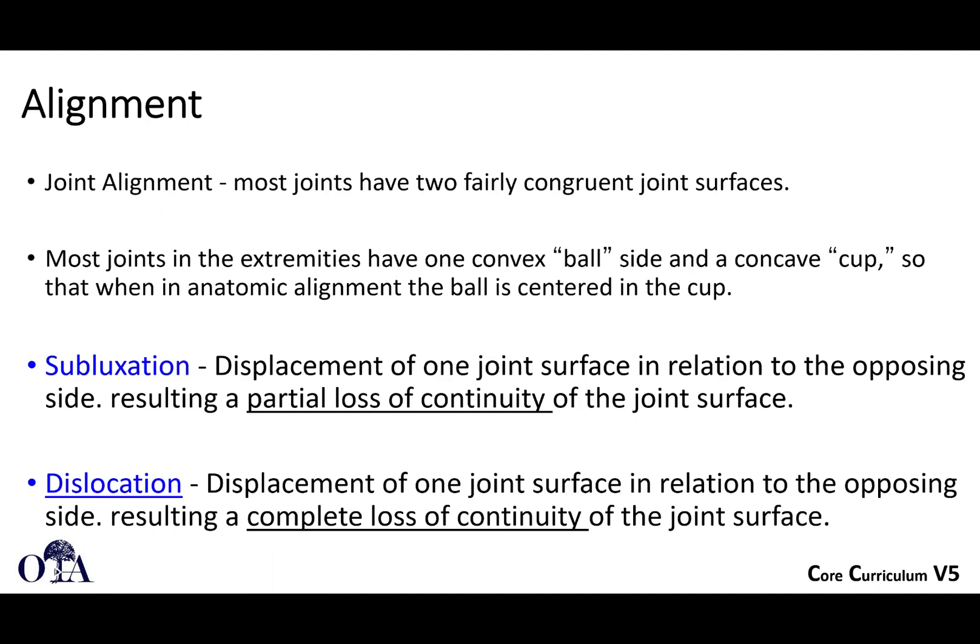Most joints have two fairly congruent joint surfaces. If you think of the knee, for example, you have the distal femur and the proximal tibia — they're supposed to be congruent. If they're not, we would say there's malalignment, because they're not aligned properly. Most joints in the extremities have a convex ball side, like the distal femur, and a concave cup side, like the proximal tibia, or the proximal femur and the acetabulum cup.